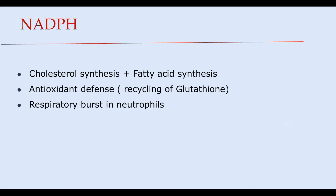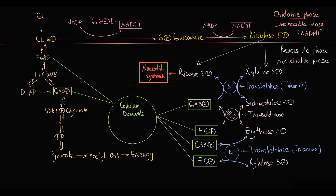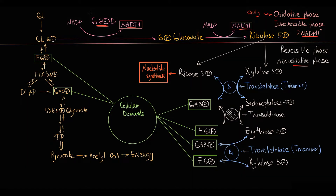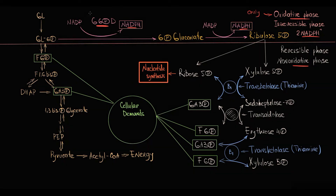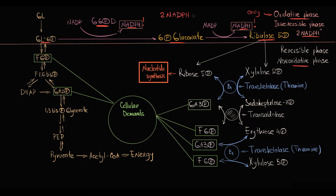NADPH has a plethora of functions throughout the body. The Hexose Monophosphate Shunt consists of an oxidative phase and a non-oxidative phase. NADPH molecules are produced in the oxidative phase, and the major enzyme in this phase is Glucose-6-phosphate dehydrogenase. It catalyzes the first step where Glucose-6-phosphate is oxidized to 6-phosphogluconate with simultaneous release of NADPH, and subsequently 6-phosphogluconate is oxidized to ribulose-5-phosphate, also with release of NADPH. These two steps together form the oxidative phase, which results in production of two NADPH molecules.